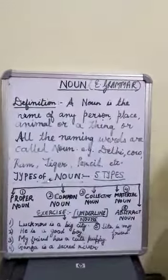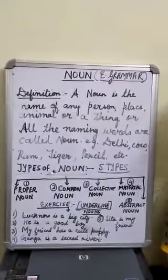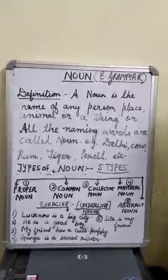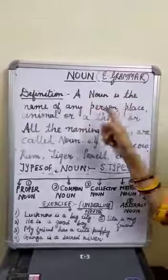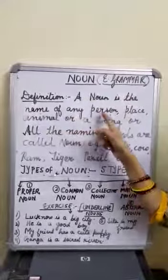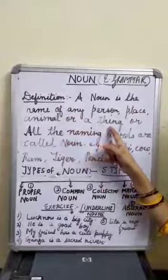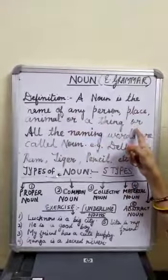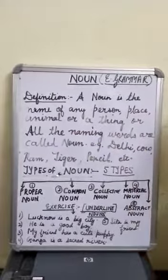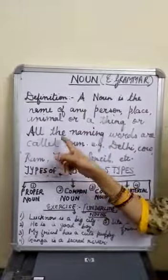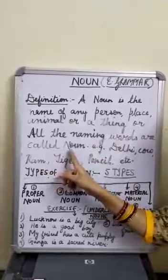First of all, I would like to tell you what is the definition of noun. A noun is the name of any person, place, animal or a thing. In other words, we can say all the naming words are called as noun.